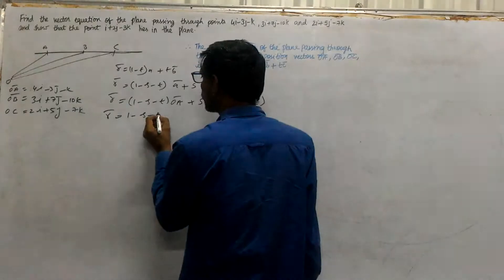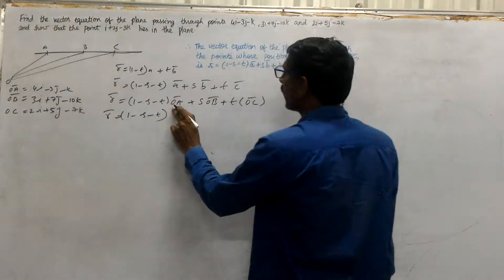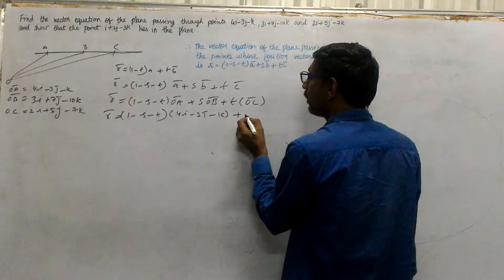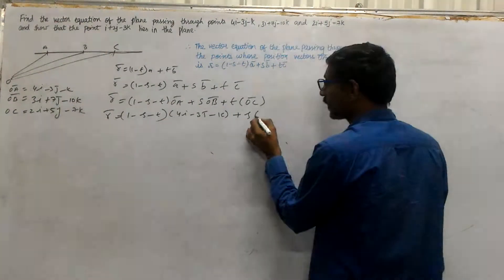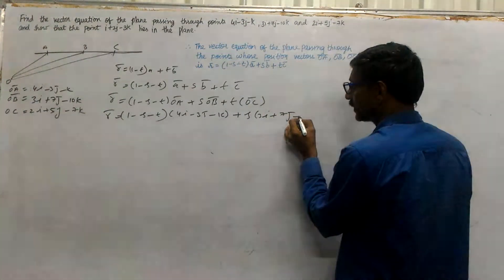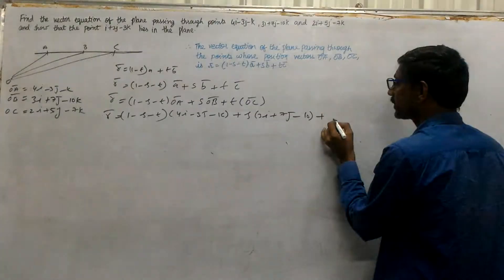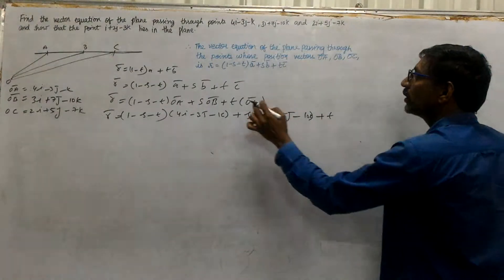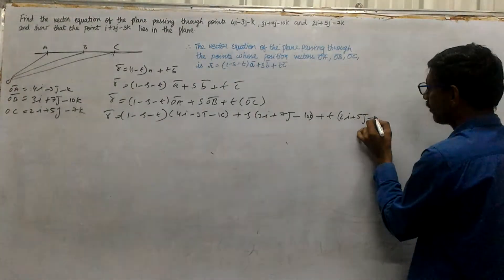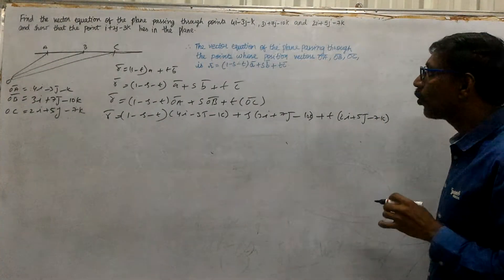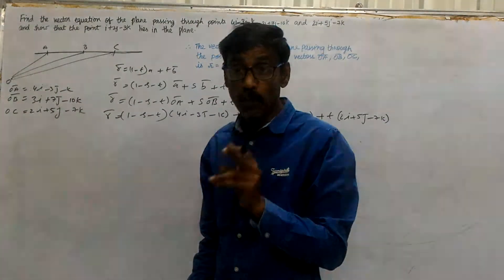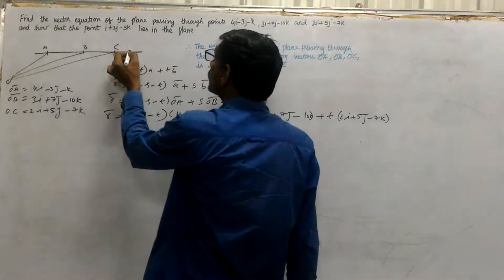So R bar equals (1-s-t) into (4i-3j-k) plus s into (3i+7j-10k) plus t into (2i+5j-7k). Now if the question asks whether these points are coplanar with another point, say point D at i+2j-3k.